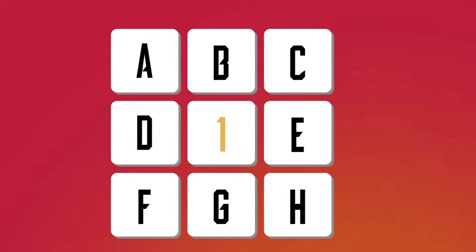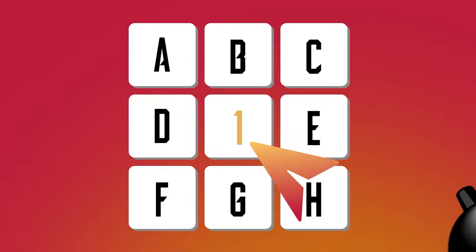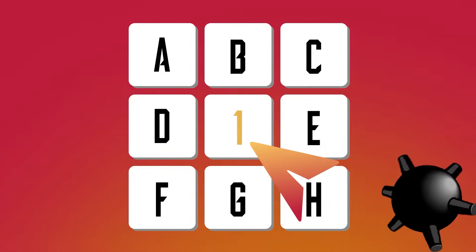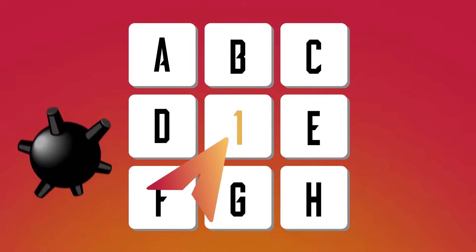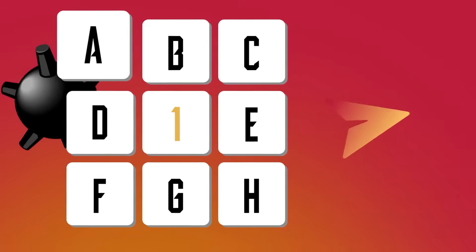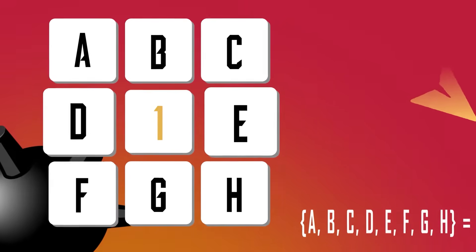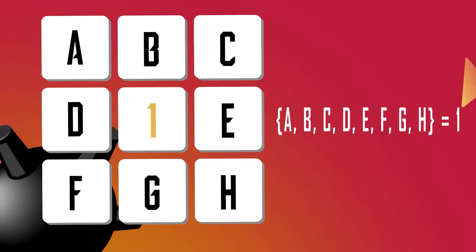Consider the following Minesweeper board where the middle cell has been revealed. We know that there is one mine around the middle cell. We can represent this with the sentence {A, B, C, D, E, F, G, H} = 1.